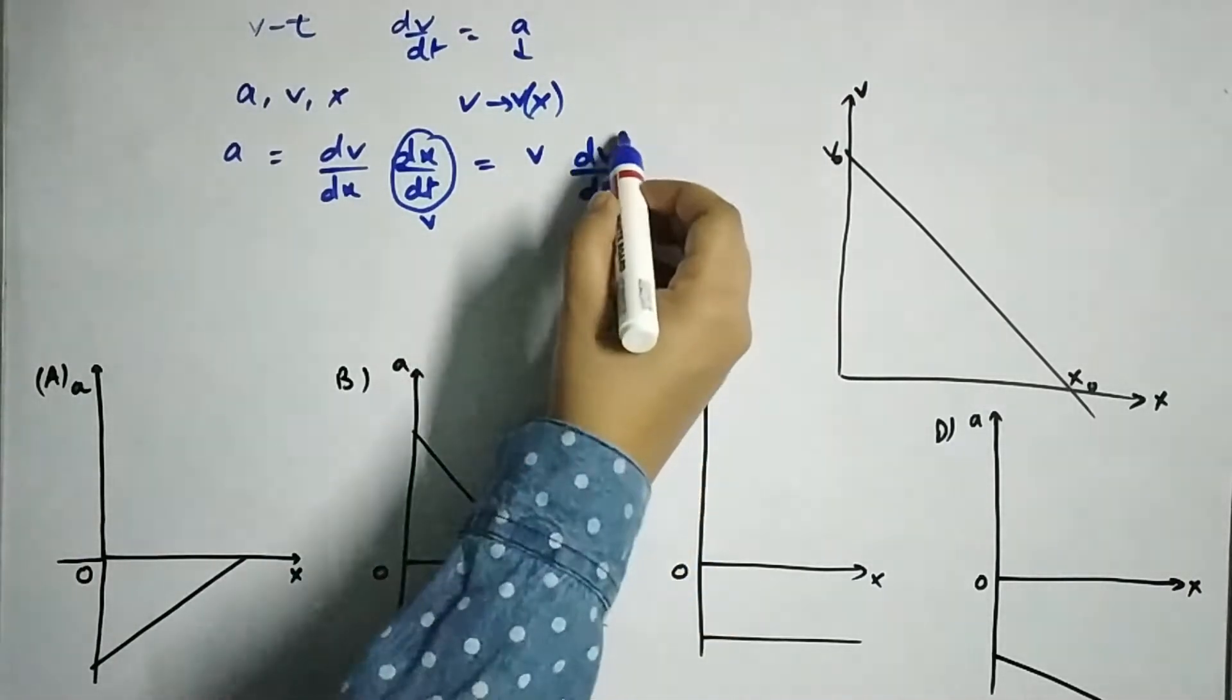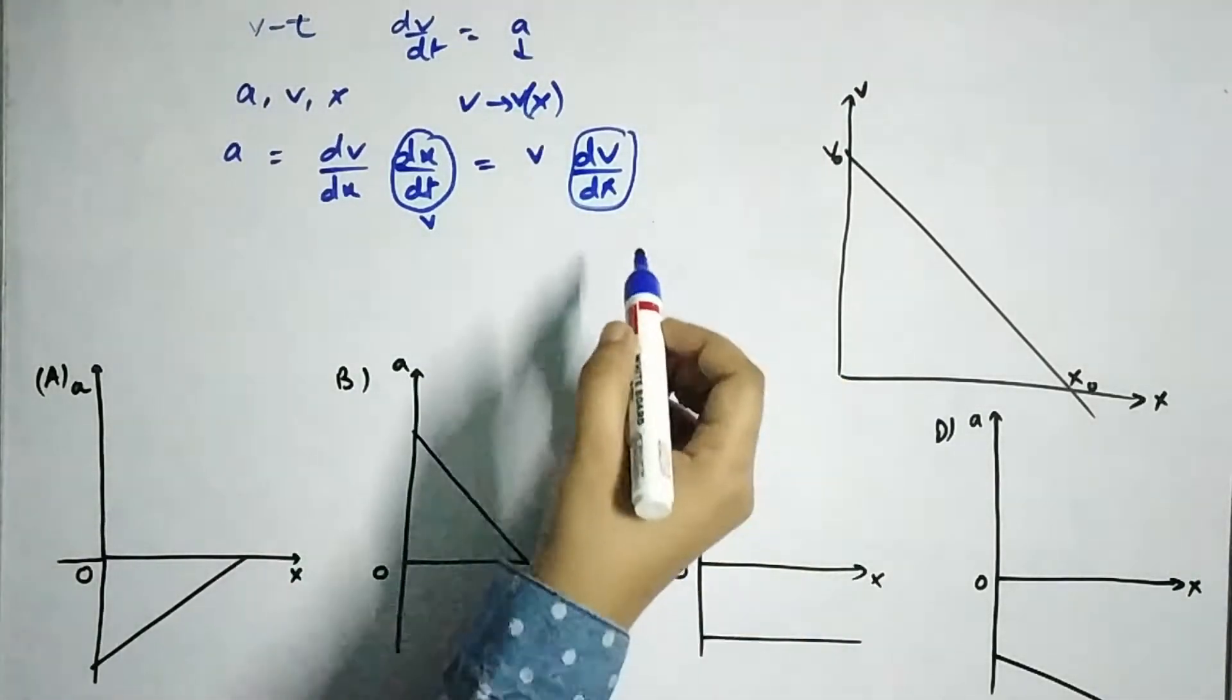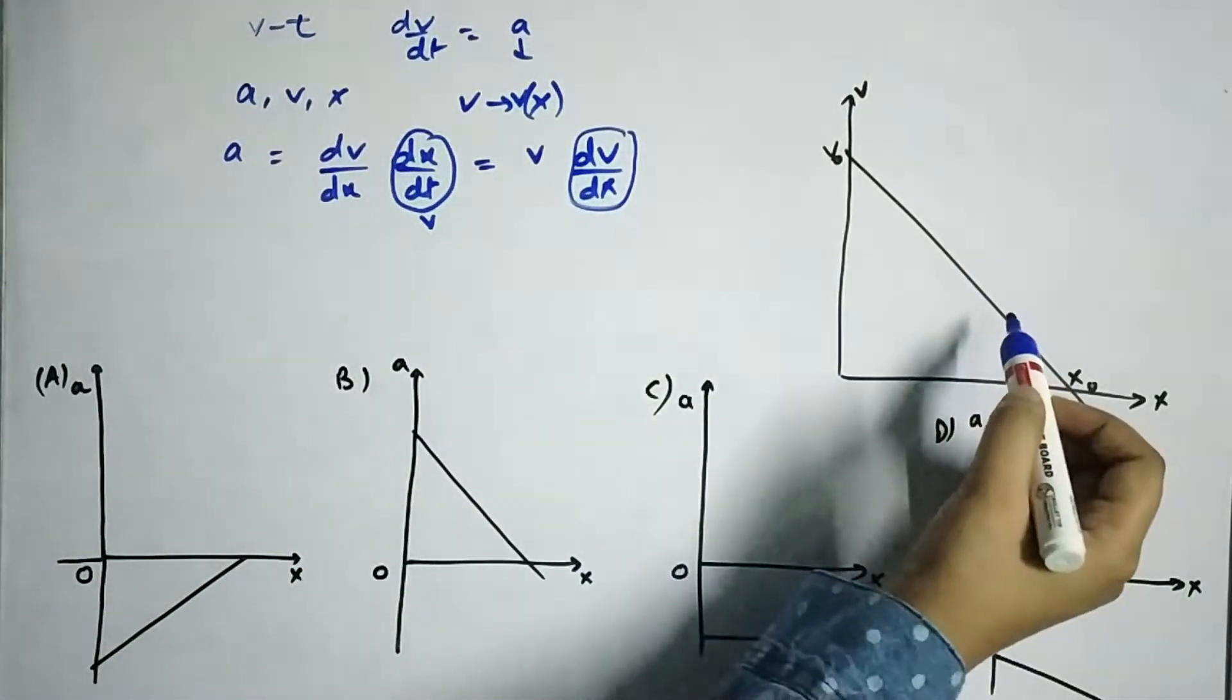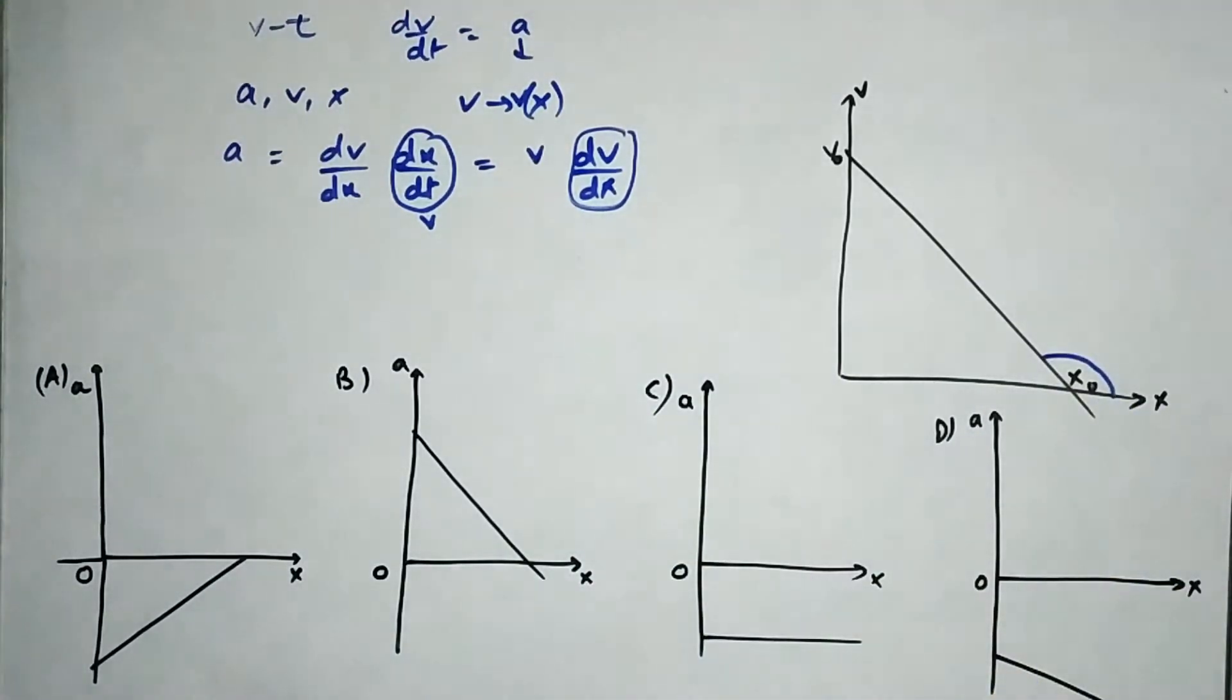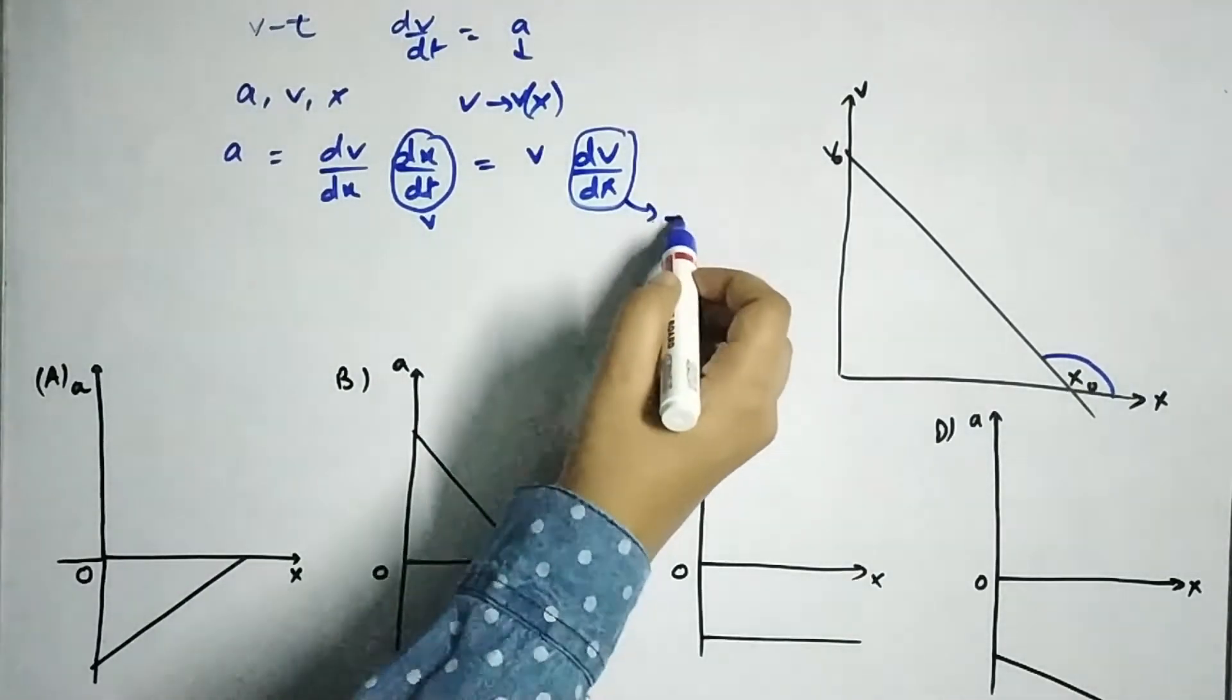they can understand that simple dv by dx is nothing but the slope of this graph and since this angle is obtuse, so we can say that this slope will be negative.